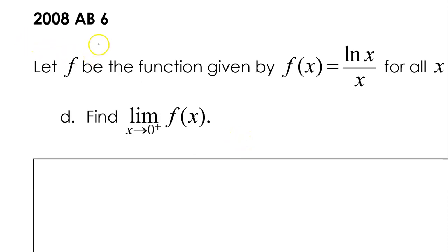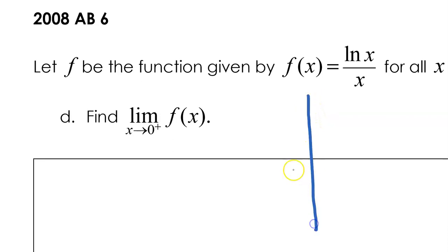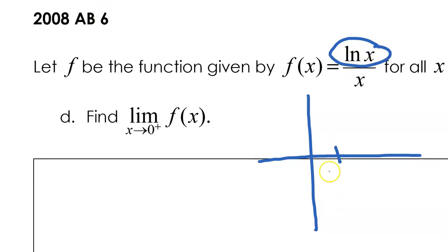Let's start with free response question number 6 from the 2008 exam, part D. Function F involves the natural log of X. So before we answer the actual question, let's make sure we remember our parent functions. You should have memorized what the parent function natural log X looks like. It has a vertical asymptote, which is the y-axis, and it passes through an X value of 1. So this is what natural log X looks like.